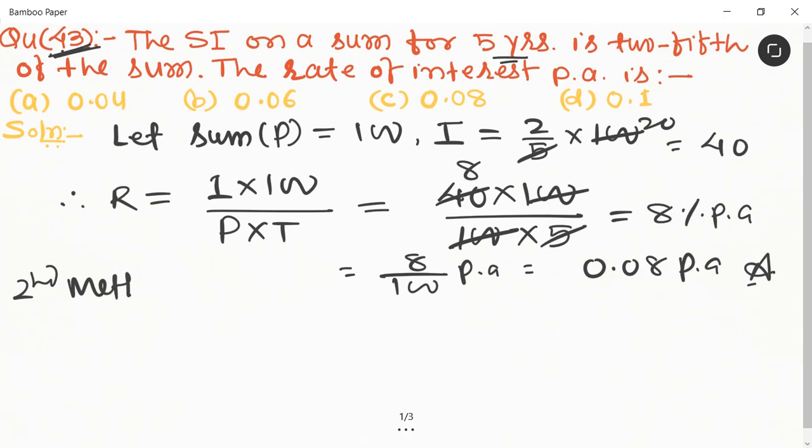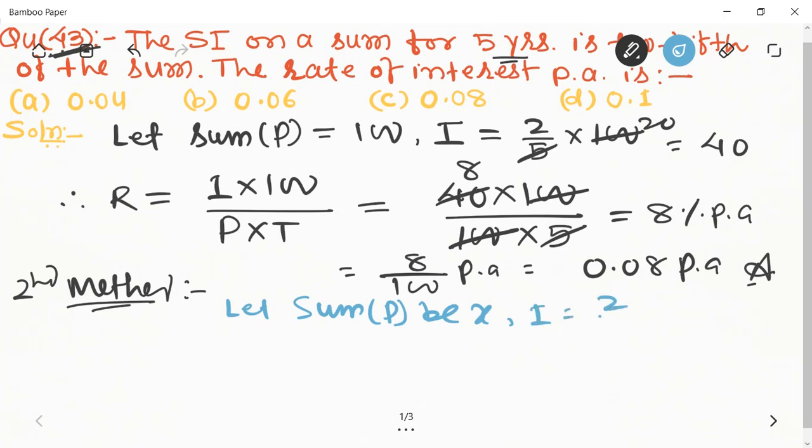Second method: Let sum be x. The simple interest equals 2/5 of x, and time is given as five years.